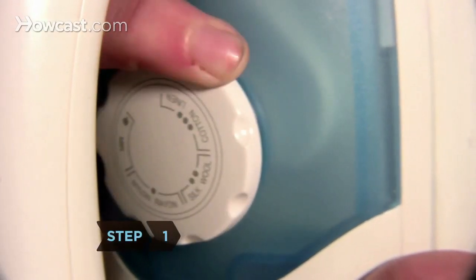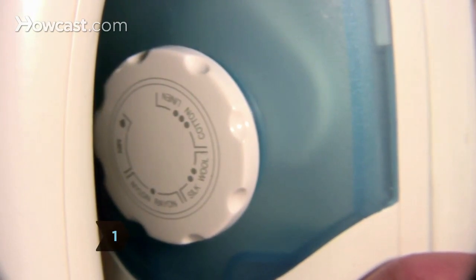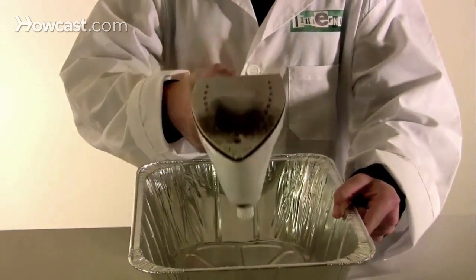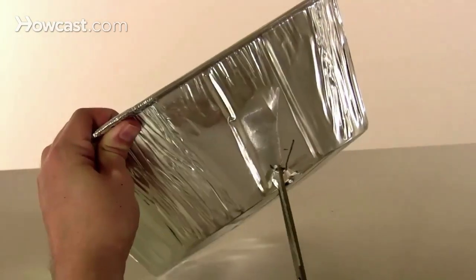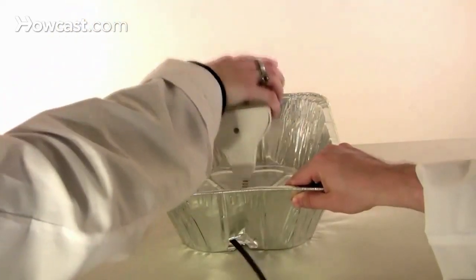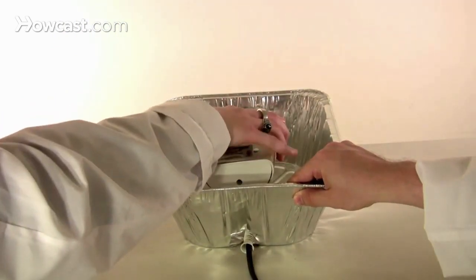Step 1: Turn the iron to the highest setting, but don't plug it in. Position it handle side down in the center of one of the aluminum pans. Cut a hole in the bottom corner of the pan large enough for the iron's cord to slide through. Keeping the iron in the center of the pan, pull the cord through the hole.